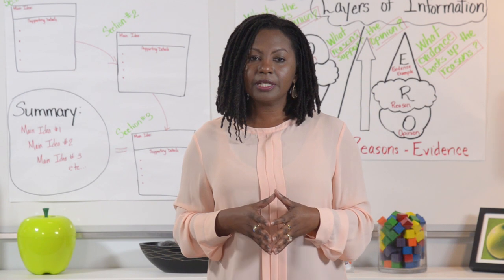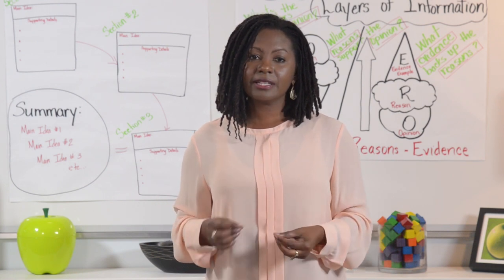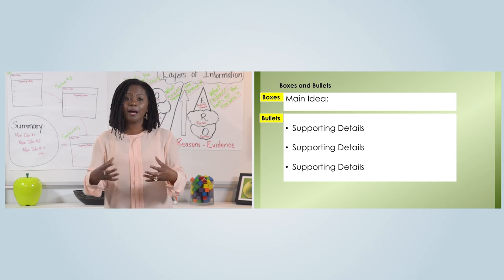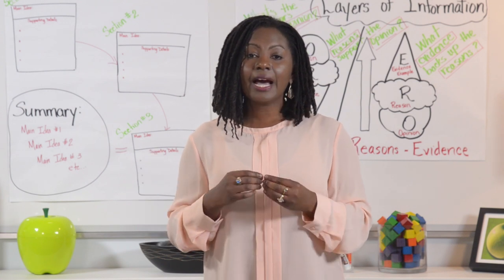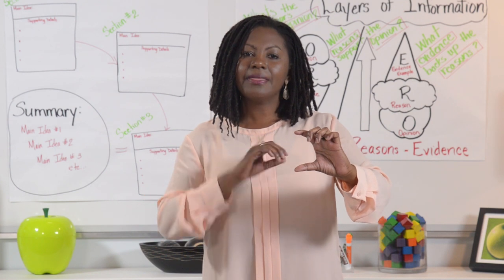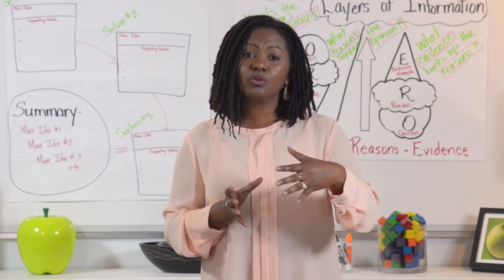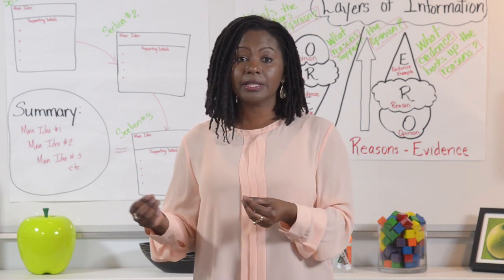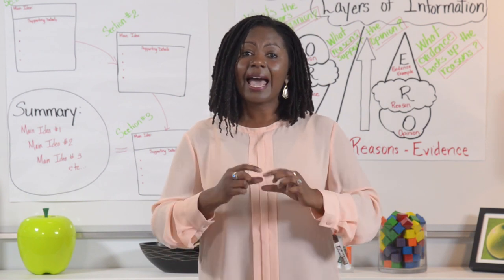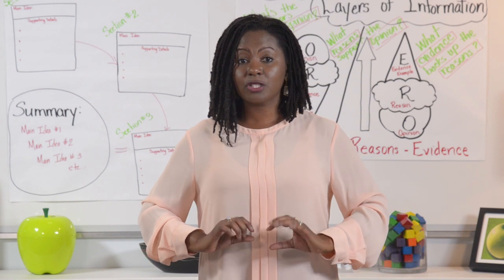When introducing boxes and bullets, you want to explain to your students that most authors who write expository pieces organize the text by presenting a main idea or big topic and then supporting details to explain that topic further. This will help students, as they read each section, to identify the main idea and then plot out the supporting details that follow. In longer pieces of text, I would advise chunking the text to make it easier for students, because as they do this strategy, they're thinking: is this sentence one that goes in the box, or does it go in the bullets with the supporting details?